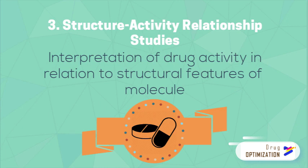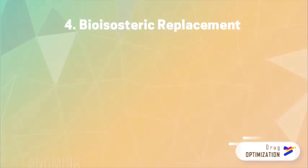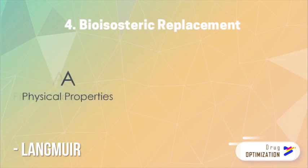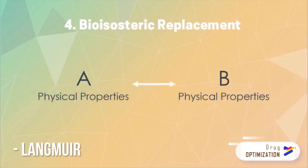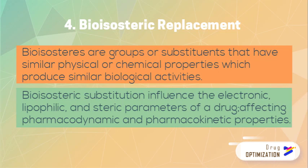Generalized conclusions can be made after examining a sufficient number of drug analogues. The concept of bioisosterism was derived from Langmuir's observation, in which certain physical properties of chemically different substances are strikingly similar. Generally, bioisosteres are groups or substituents that have similar physical or chemical properties which produce similar biological activities. A bioisosteric substitution can influence the electronic, lipophilic, and steric parameters of a drug, thus affecting pharmacodynamic and pharmacokinetic properties.